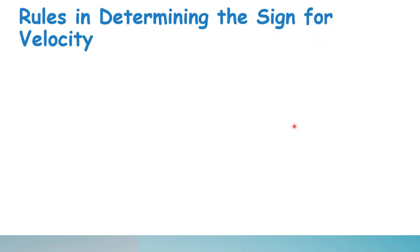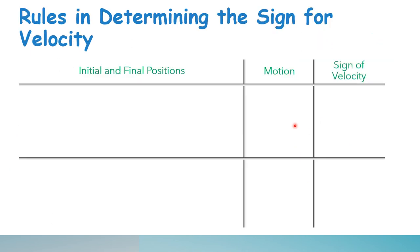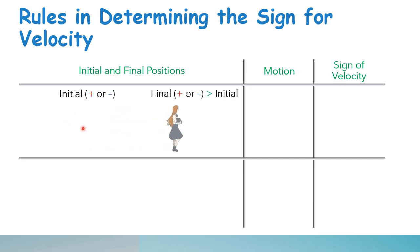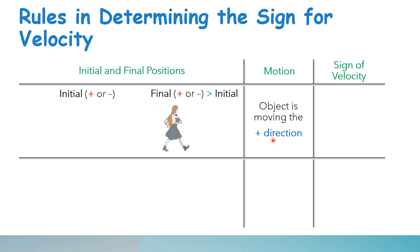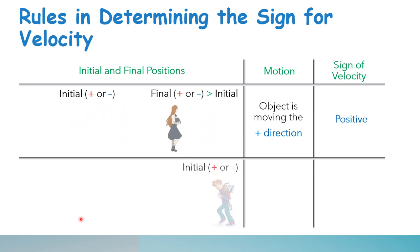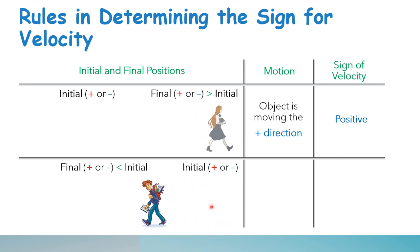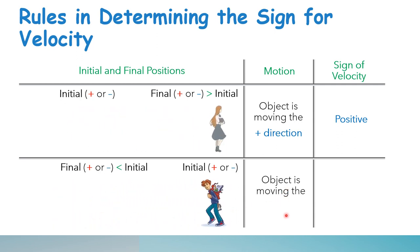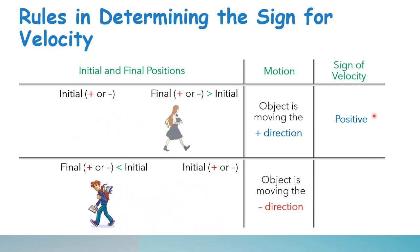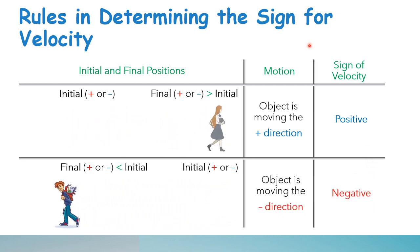The rules for determining the sign of velocity: if your motion goes from a lower to a higher position — moving in the positive direction — the sign of your velocity is positive. But if you move from a higher position to a lower position — moving toward the negative direction — the sign of your velocity is negative.